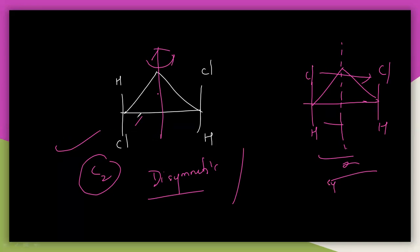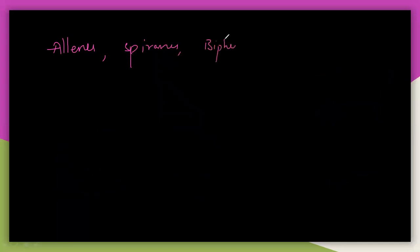Not only this example, but there are three other special molecules which are very, very important: allenes, spirans, and biphenyls. These three are also having a C2 axis and are also called disymmetric molecules.